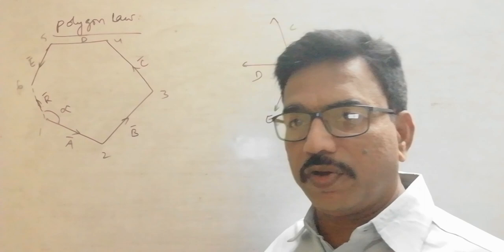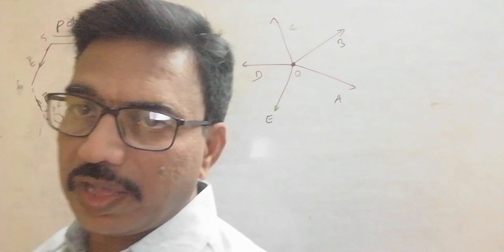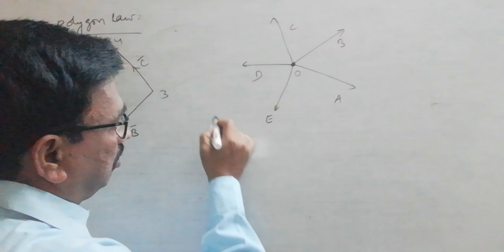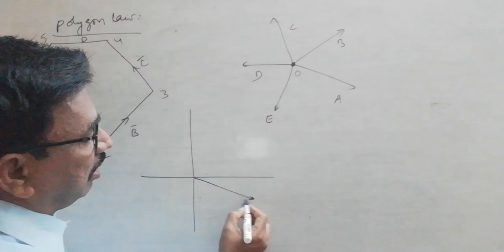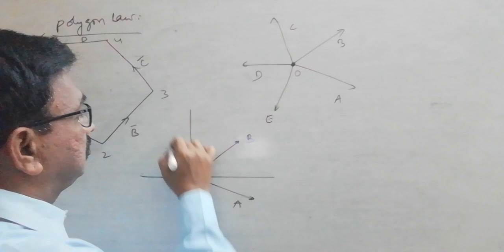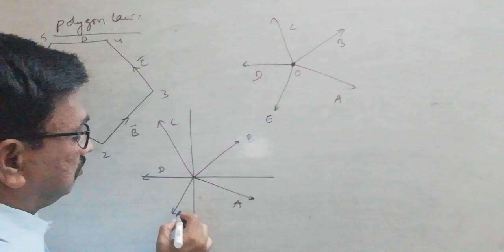Suppose if we want to find out the magnitude and direction of the resultant of a set of vectors using analytical method, then we will take a coordinate system like this, and we will take vectors A, B, C, D, and E like this.